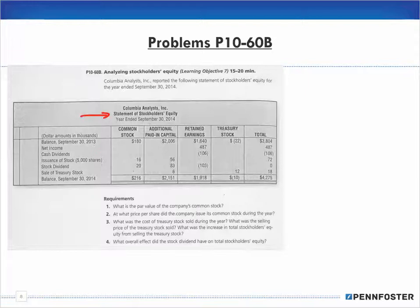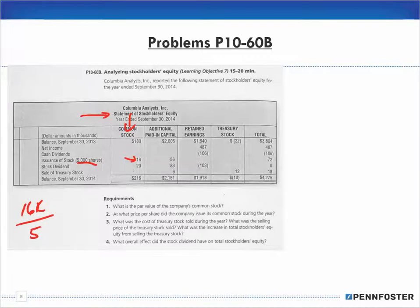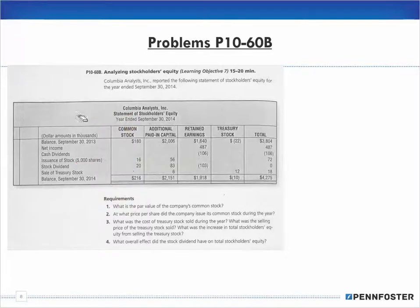To find the par value of the common stock, we look at the issuance of stock: 5,000 shares for a value of $16,000. So $16,000 divided by 5,000 shares gives us $3.20 per share. That's the par value per share.